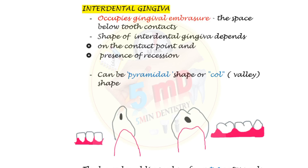In the previous videos we saw about marginal gingiva and attached gingiva. In this video we'll see about the third part of gingiva, that is the interdental gingiva. Interdental gingiva occupies the gingival embrasure, that is the space between below the tooth contacts, the interproximal space.